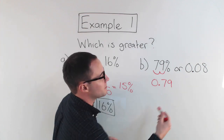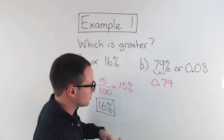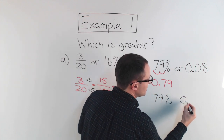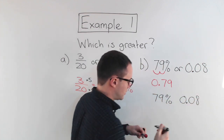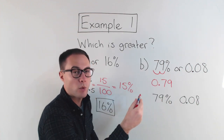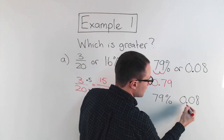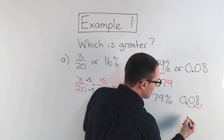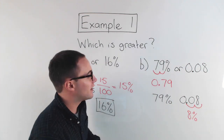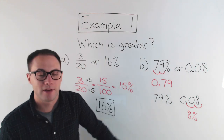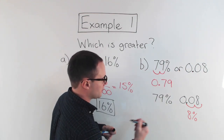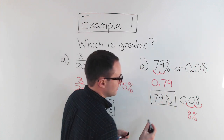Let's try it the other way — making them both percents. We keep seventy-nine percent, and change zero point zero eight to a percent by moving the decimal point twice to the right, which gives eight percent. Either way, seventy-nine percent is greater than zero point zero eight.